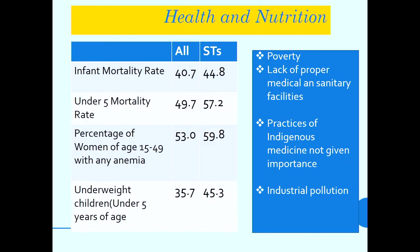Health and nutrition is a major issue faced by tribal communities. Looking at the statistics, there is a huge gap between non-tribes and tribes. Infant mortality rate is a major indicator of health status — it is 40.7 in the general group population but 44.8 in the case of Scheduled Tribes. Under-5 mortality rate is 49.7 for other communities but 57.2 for Scheduled Tribes. Anaemia is 53 percent among non-tribal communities but 59.8 percent among Scheduled Tribes.